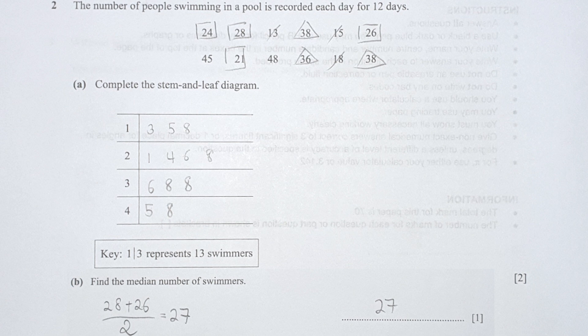The tricky thing about this question is that you cannot include the comma. There's 238 there, so you are required to put 2, 8 in the stem-and-leaf diagram.